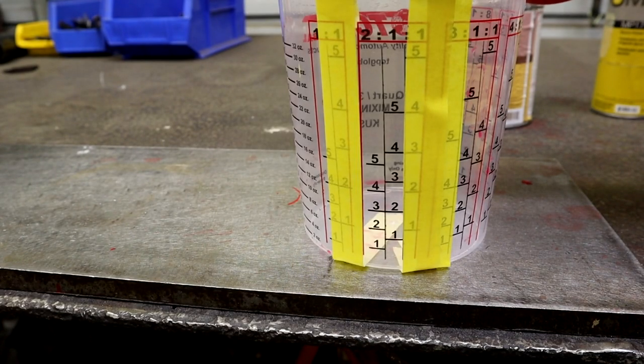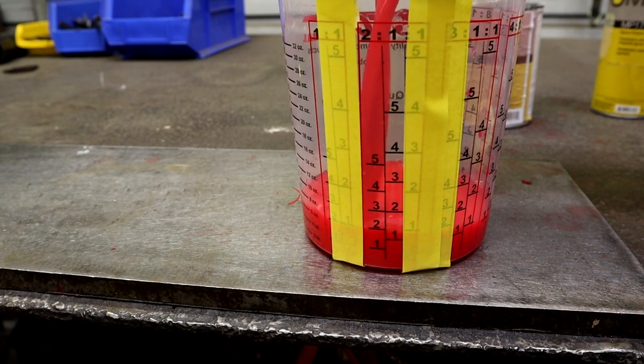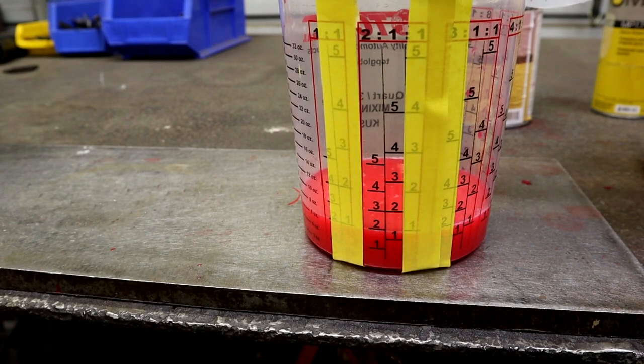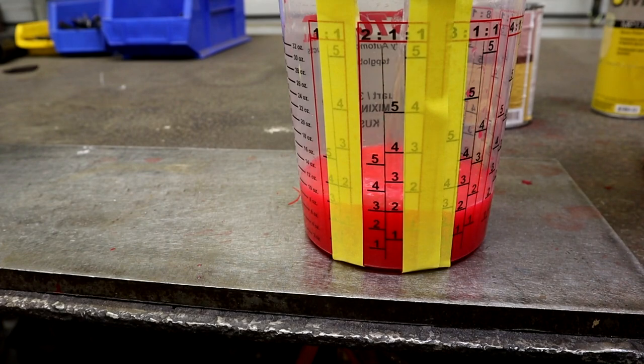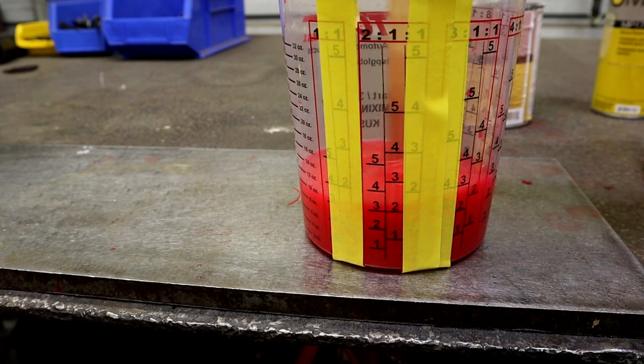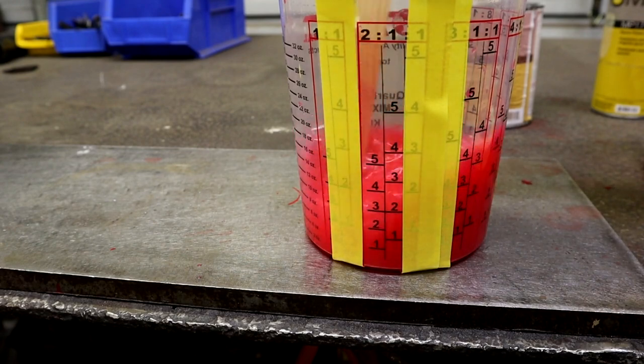Alright, now we're going to bring the color up to the two, which is right here. Keep her dead on the line. And then we're going to get our reducer and go up to the next two, which will be here. So that'll be mixed two to one. And then just like we did on the one to one, you'll give her a good stir, pour it through a paint strainer, and that right there is ready to paint.